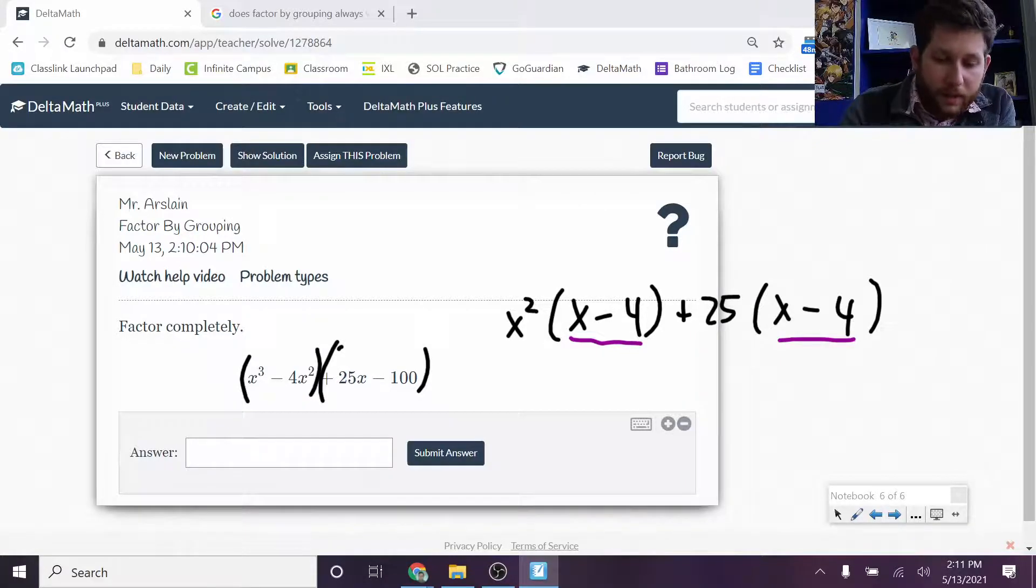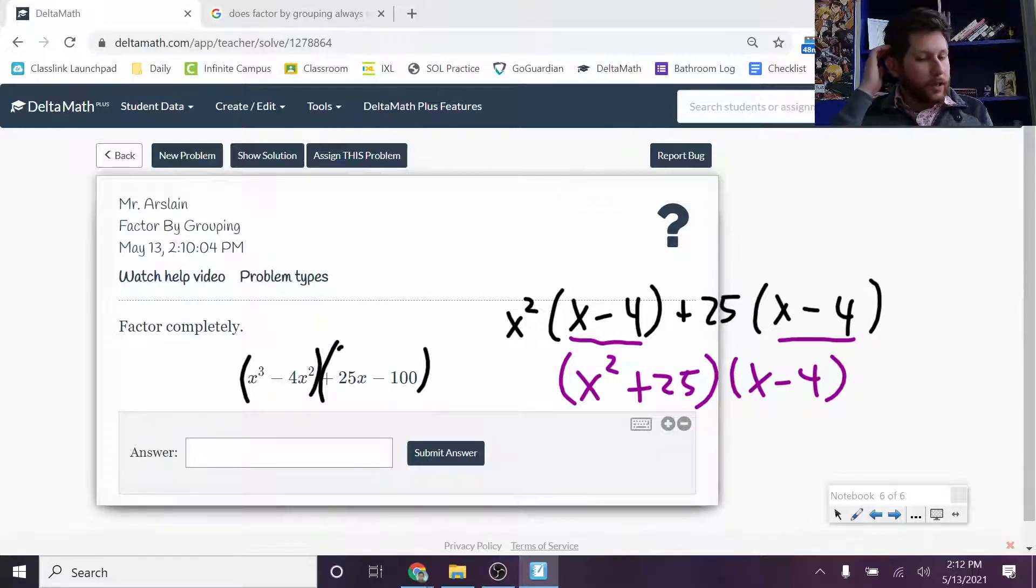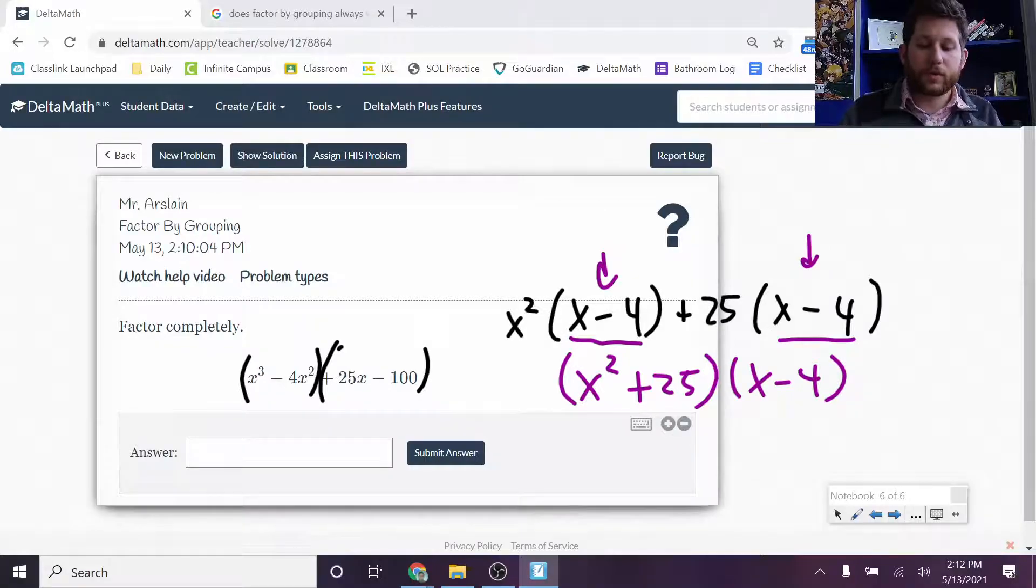We take both of the x minus 4s, and we factor those out. And so you end up with something like this. If I divide both of these terms by x minus 4, what do I have left over? I have x squared plus 25. That's what I have left over. And then x minus 4. So notice I kind of take the greatest common factor out of both. Ideally, I'm going to be left with two matching binomials. Those matching binomials, I'll factor those out.